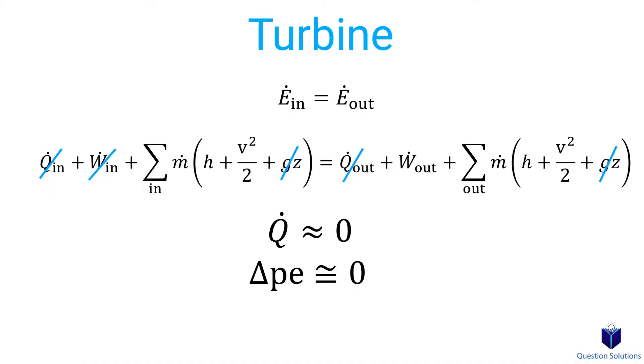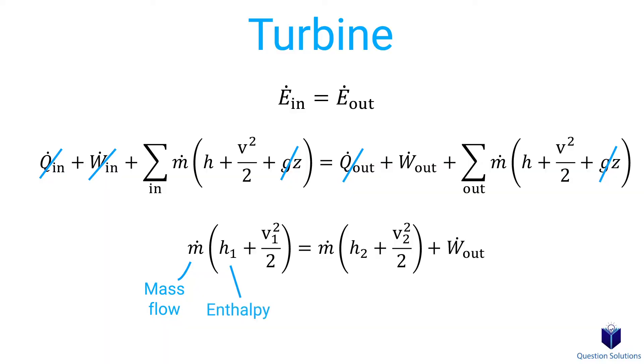So kinetic energy has to be considered. In certain cases, it's possible that this change is relatively small compared to enthalpy change, in which case it can be negligible. So with all of this in mind, our big energy balance equation for a steady flow system usually simplifies to this. We have mass flow, enthalpy, kinetic energy, and of course, work output.